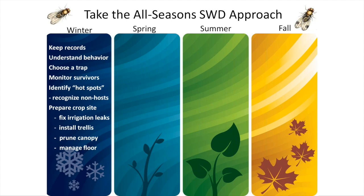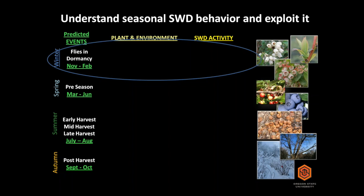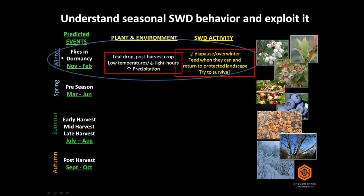Let's begin with the winter season. Try to understand SWD behavior at different seasons. In winter, leaves are dropping, light is reducing, and temperatures are going down. In the Pacific Northwest we're getting precipitation; in Colorado, you may be getting snow.